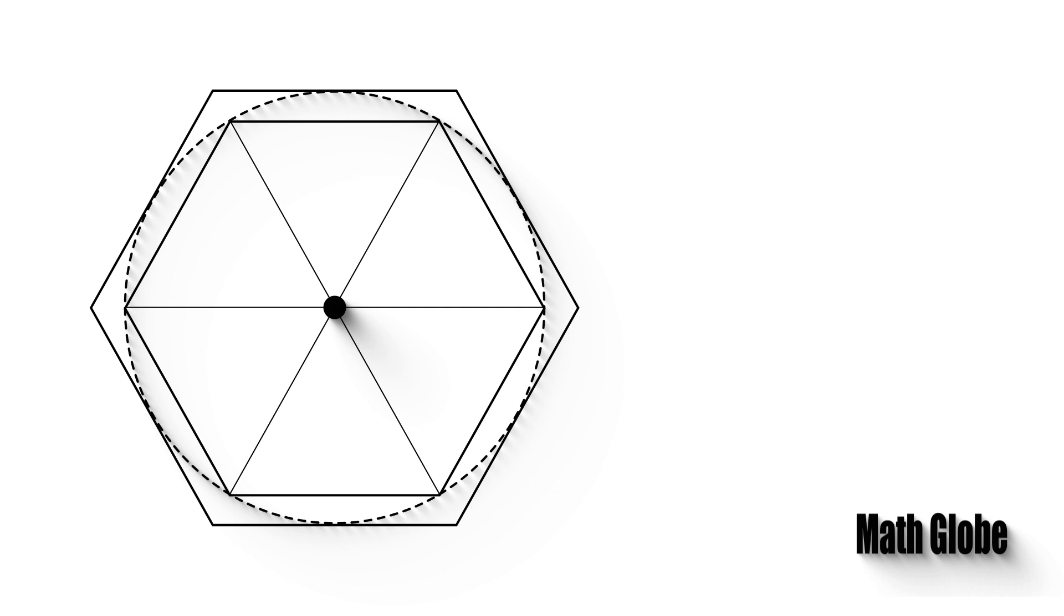As the regular hexagon has equal sides, the center angles will be equal to 60 degrees. Likewise, as the interior angles of the outer hexagon are 120 degrees, the measure of the shown angles will be 60.